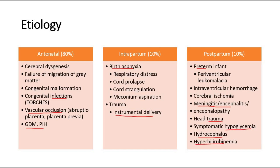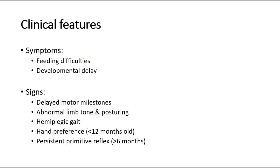The symptoms of a patient having cerebral palsy include feeding difficulties due to pseudobulbar palsy, with difficulties such as oral motor discoordination, slow feeding, and gagging and vomiting episodes. Developmental delay in language and social skills is also a clinical feature. Signs to look out for include delayed motor milestones, abnormal limb tone and posturing, and abnormal gait — often the hemiplegic gait — once they start walking.